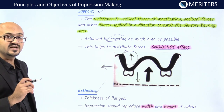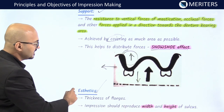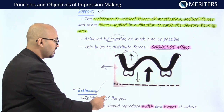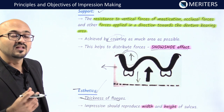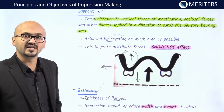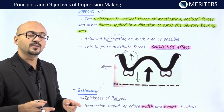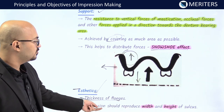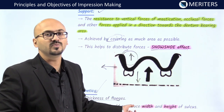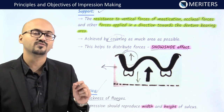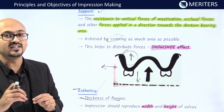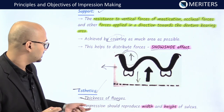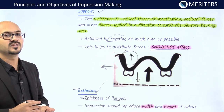The last objective is aesthetics. The thickness of the flange recorded in the impression governs the bulk of the flanges in the final denture. The impression should reproduce the width and height of the sulcus as an exact replica of the dimensions desired for the denture. The sulcus must be recorded in the same way the denture is to be made, making aesthetics an important part of complete denture impressions.